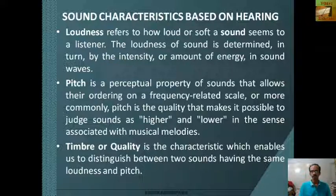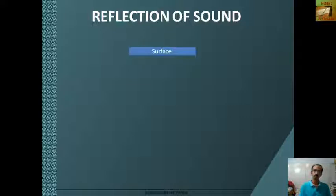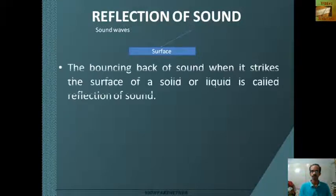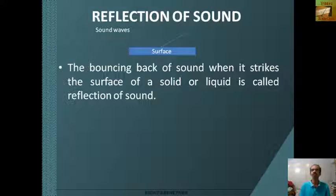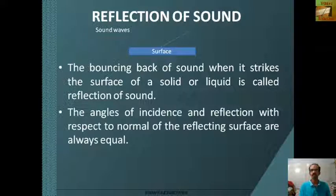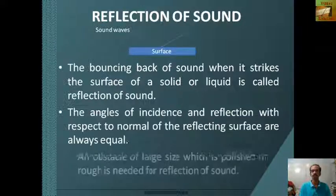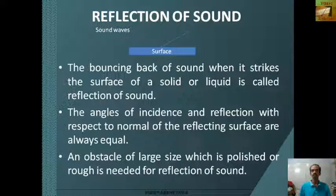Next we can see the reflection of sound. When sound is incident on a surface it is reflected back. The bouncing back of sound when it strikes the surface of a solid or liquid is called reflection of sound. When reflection happens, the angle of incidence and the angle of reflection with respect to the normal of the reflecting surface are always equal. For reflection to take place, the obstacle should be of large size, which can be polished or rough.